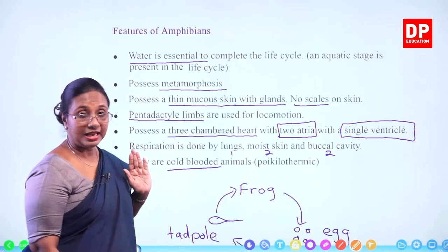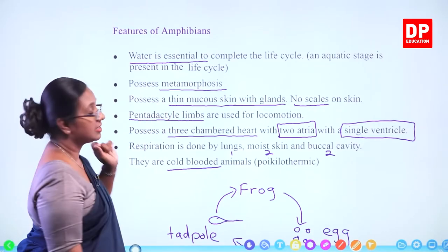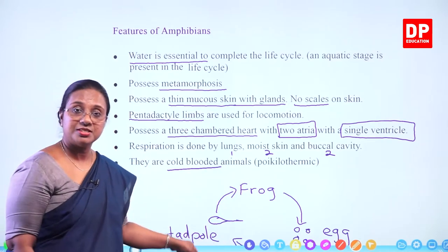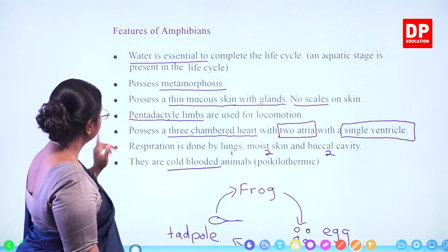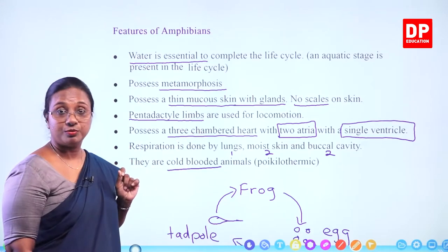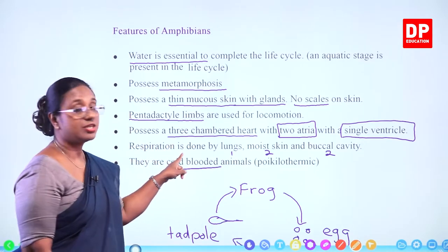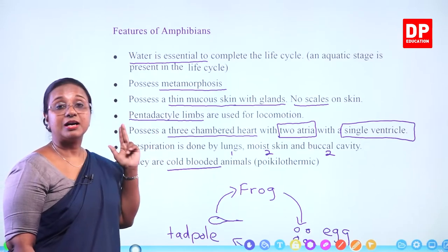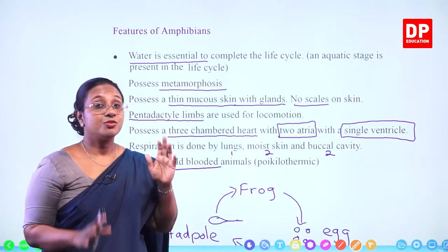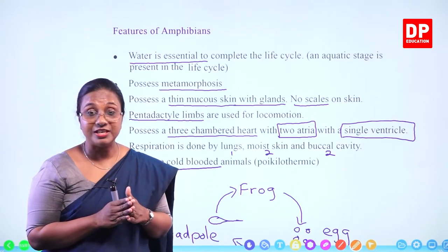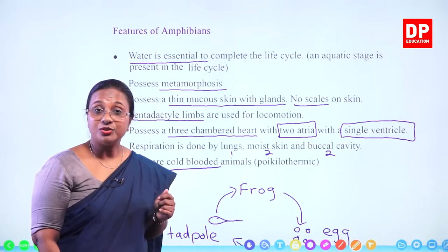To summarize the features of amphibians: water is essential to complete their life cycle; an aquatic stage is present. They possess metamorphosis changes. They have a thin mucus skin with glands and no scales. Limbs are pentadactyl and used for locomotion. They possess a three-chambered heart with two atria and one ventricle. Respiration is done by lungs, moist skin, and buccal cavity. They are cold-blooded, poikilothermic animals. With that, I will move on to the next slide.